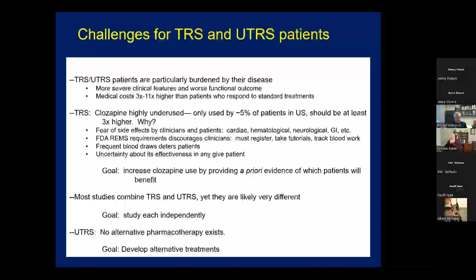Starting with the treatment-resistant group — people who do respond to clozapine — the problem is this medicine is highly underused. Perhaps only 5% of patients in the U.S. get clozapine when the number should be at least three times higher. There's fear of side effects by both clinicians and patients, because clozapine does have potentially severe side effects: cardiac, hematologic, neurological, GI, et cetera. Also, the FDA has imposed requirements on prescribing clozapine that discourages clinicians — you have to register, take tutorials, and track blood work. The frequent blood draws required also deters patients, and there's uncertainty about whether it will work in any given patient.